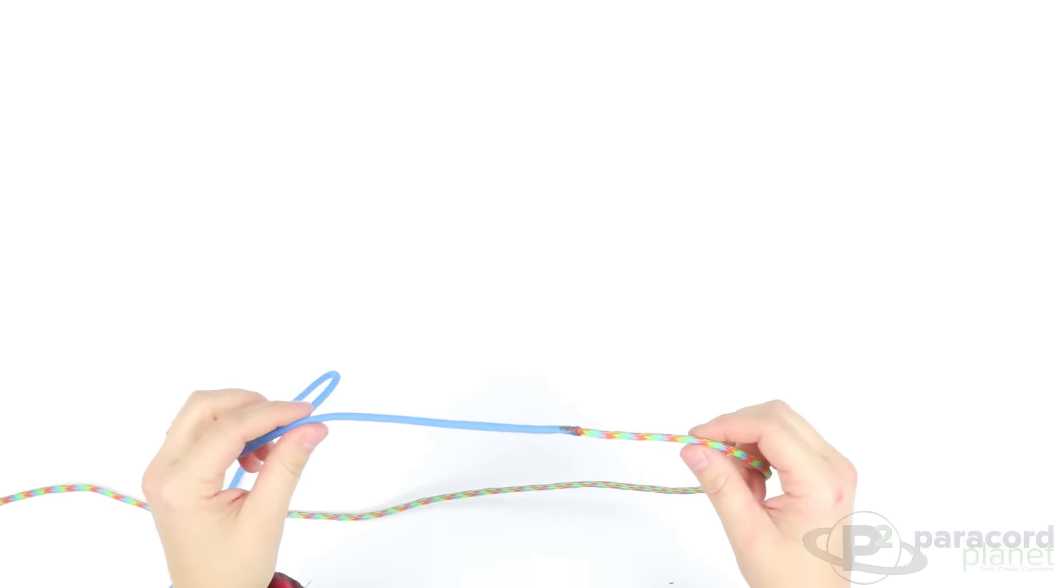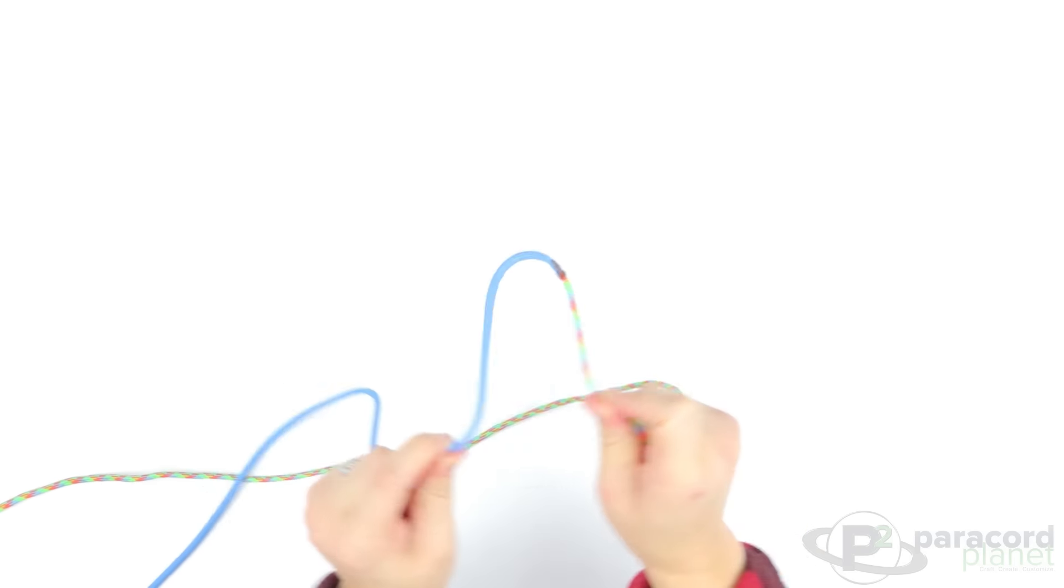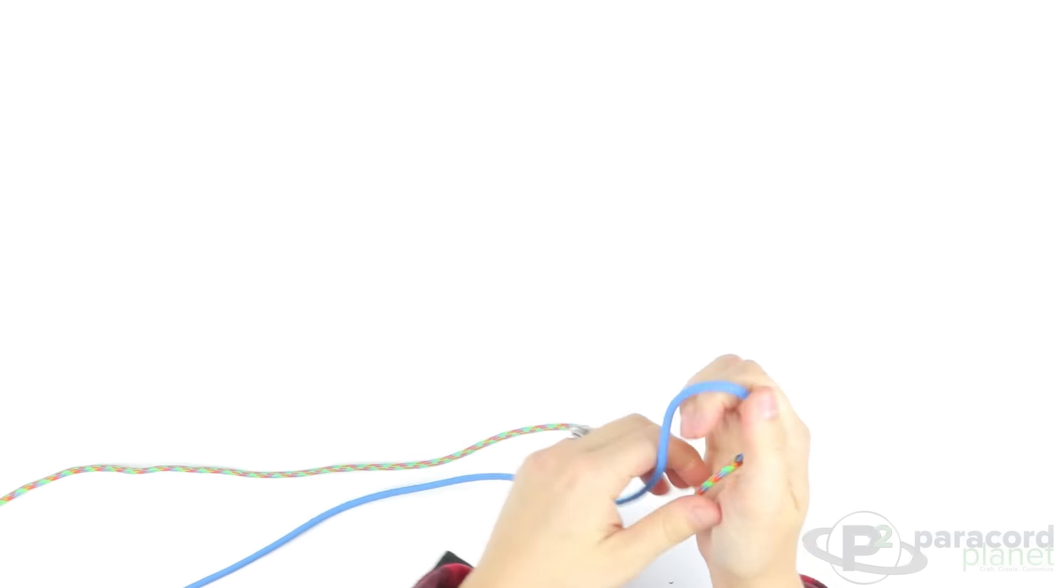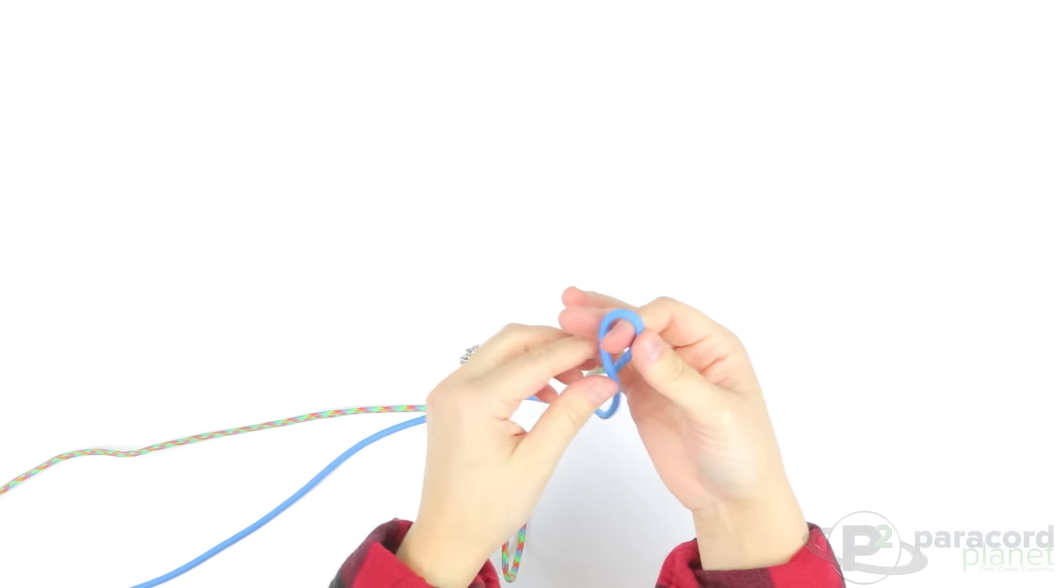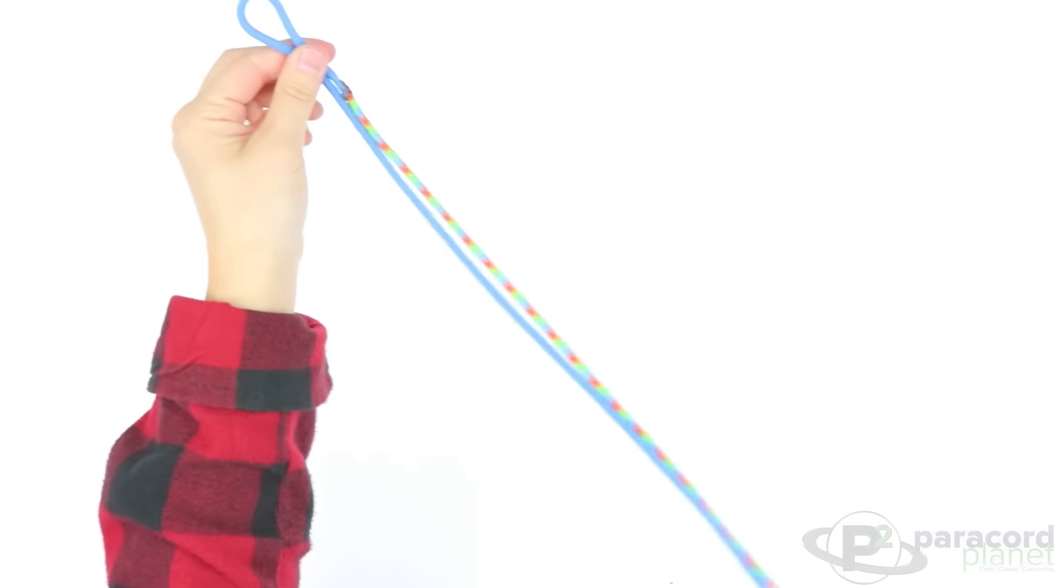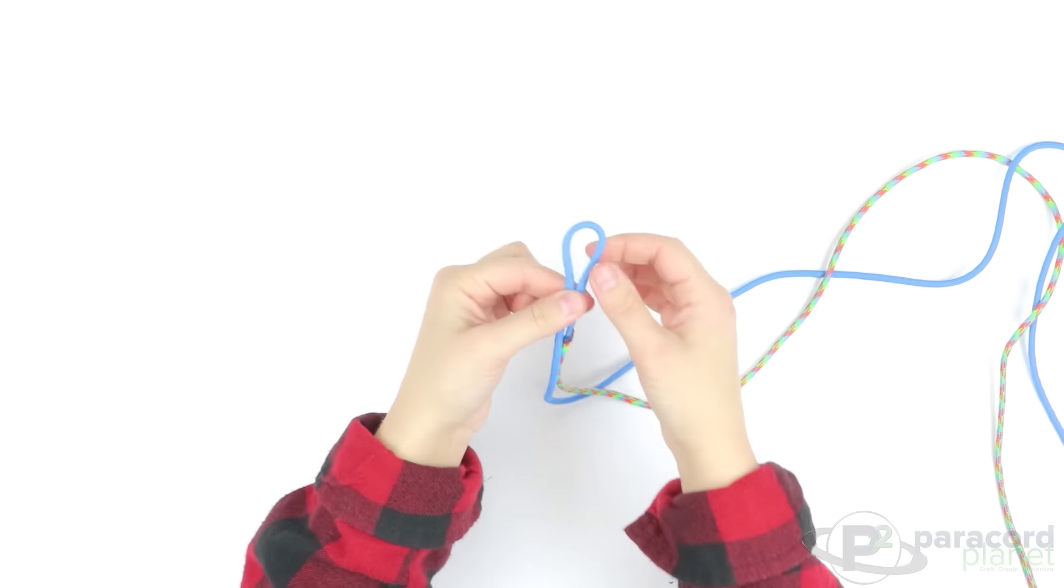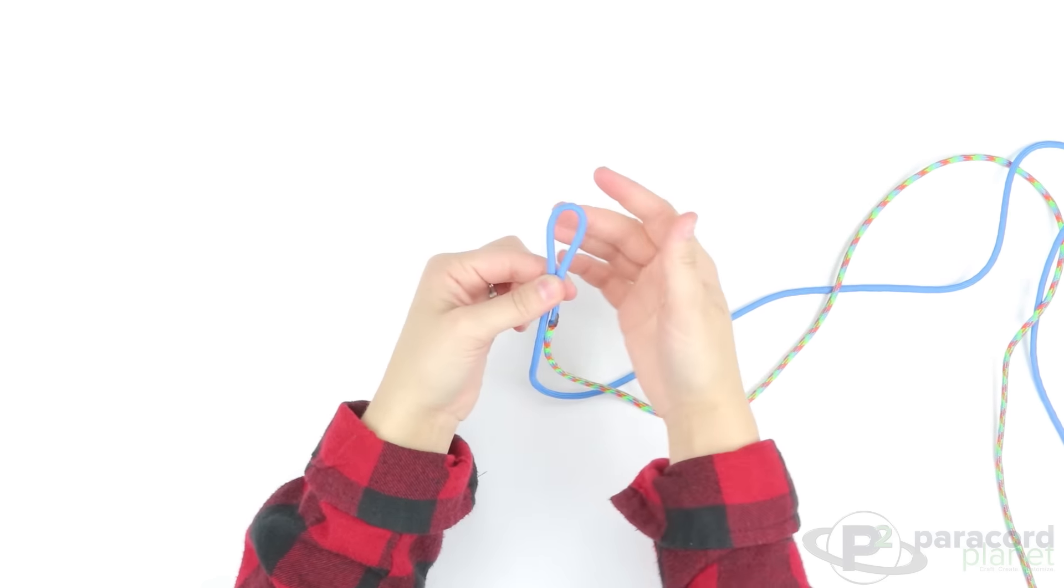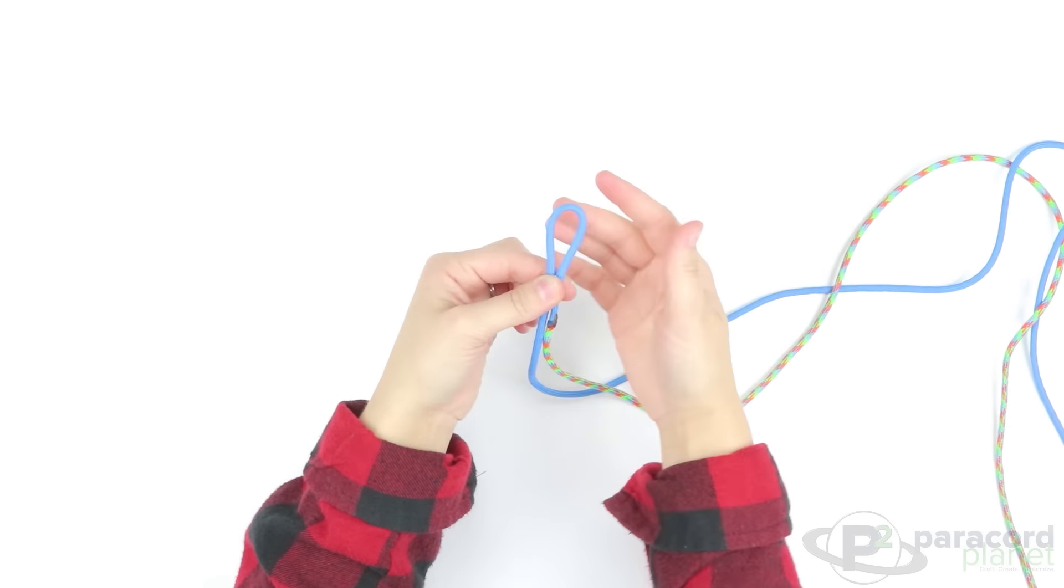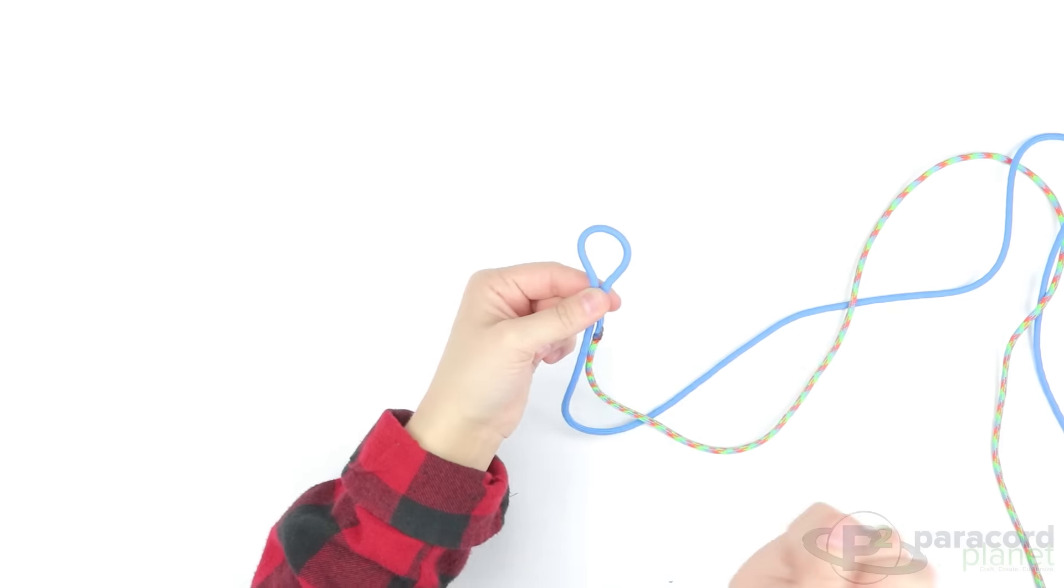So the first thing you'll want to do is have it welded if you don't already. Make a loop with your paracord and this will be where your bracelet comes together. I'm going to end my bracelet with a diamond knot, so this will be big enough for that.